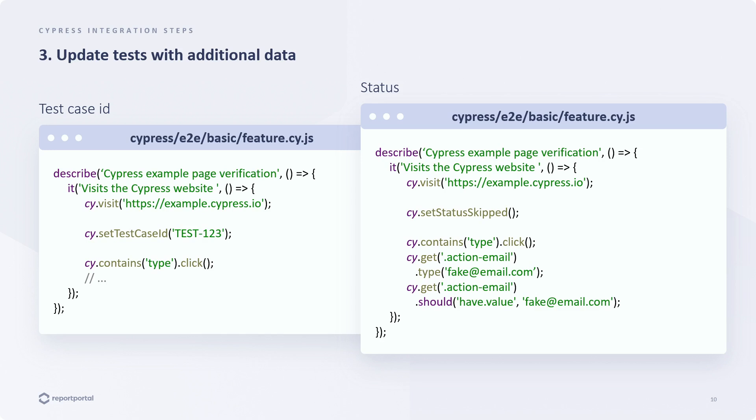Regarding the status — it indicates the test outcome, typically categorized as passed, failed, or skipped. If you need to specifically update the test status in Report Portal alone for any reason, this option is available. Let's head over to the code and explore how to manage this.